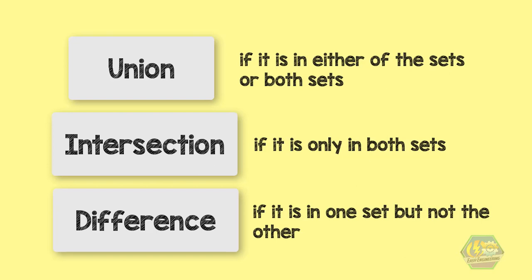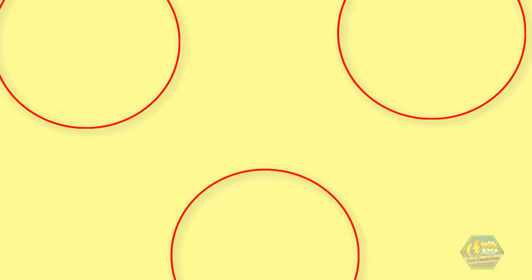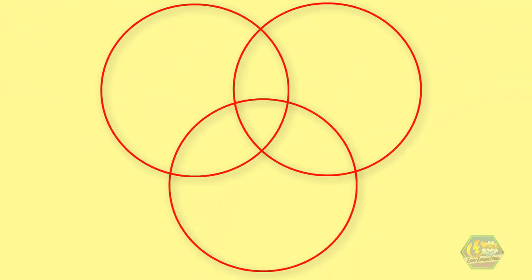But what if we are given three sets? Actually, you can also use the Venn diagram for three sets. Back to the example of students, let us say that some students like a third subject which is history.